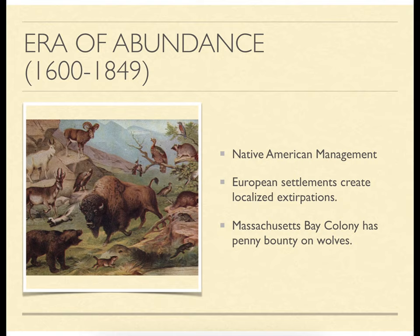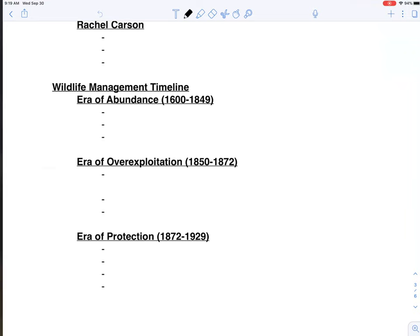Think about people arriving and thinking there's no way these things could ever be overharvested — and suddenly they're allowed to live off the land. You can imagine the recipe for disaster. But for a while, from about 1600 to 1849, we had this era of abundance, with Native American management essentially in place. European settlements began causing localized extirpations — when creatures are removed from an area but not extinct from the earth. Examples include wolves, mountain lions, and woodland caribou in Maine. We also see persecution of species like wolves in Massachusetts, where they put a penny bounty on them.